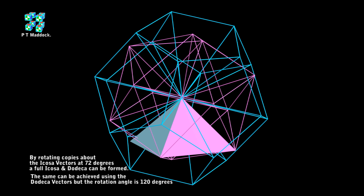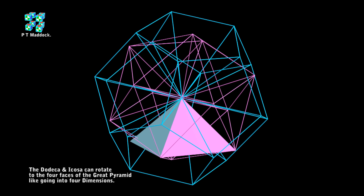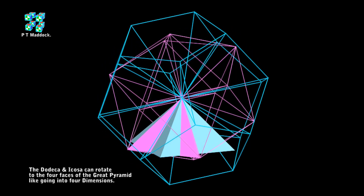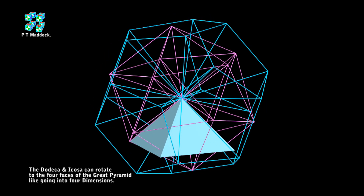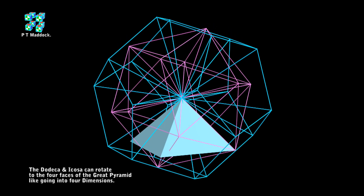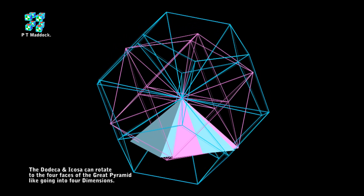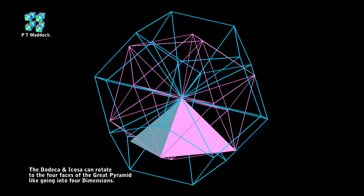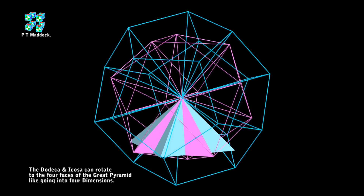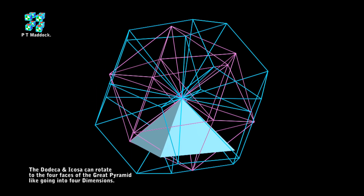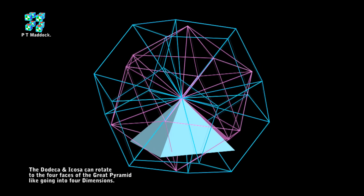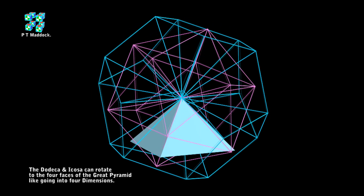I've got something interesting to show you. This arrangement of the icosa and dodeca can come from the four faces — maybe it's going into four dimensions. Let's take a look at this little animation. This is an important discovery because now we know the orientation of the icosa and dodeca.